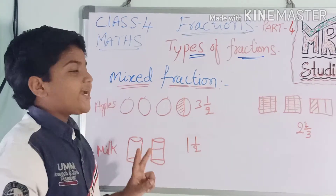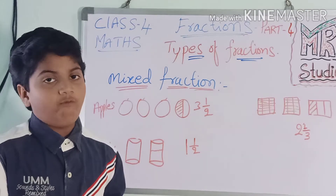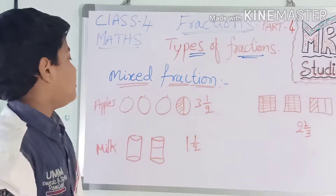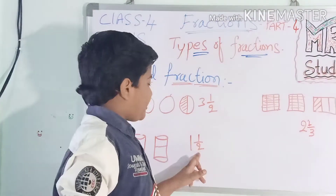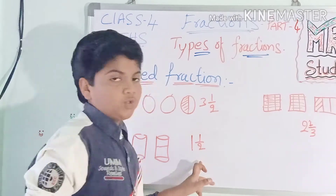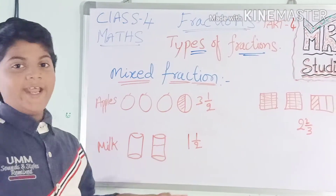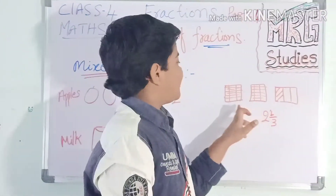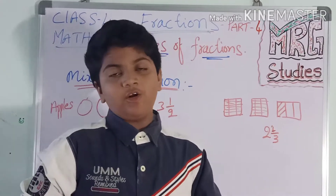Next example: one day my mother gave me two glasses of milk. I drank one glass completely, and from the second glass I drank only half. So that is one and one-half — that is also a mixed fraction.